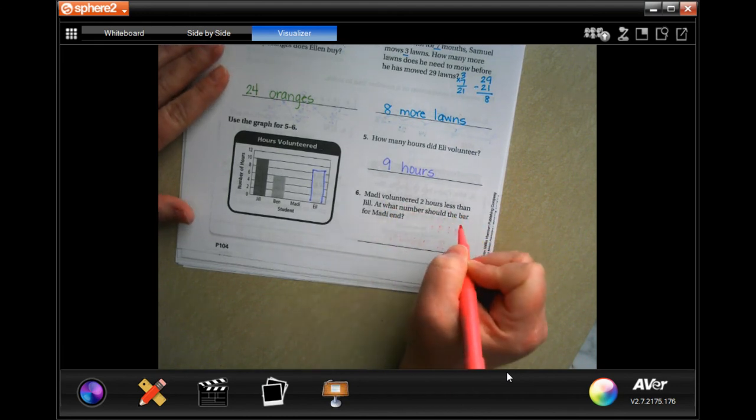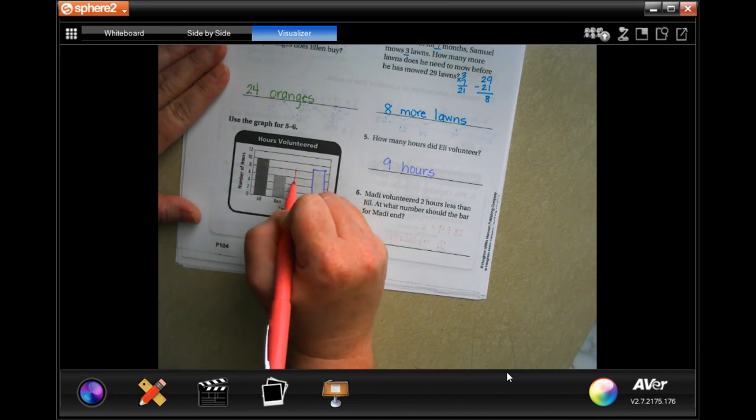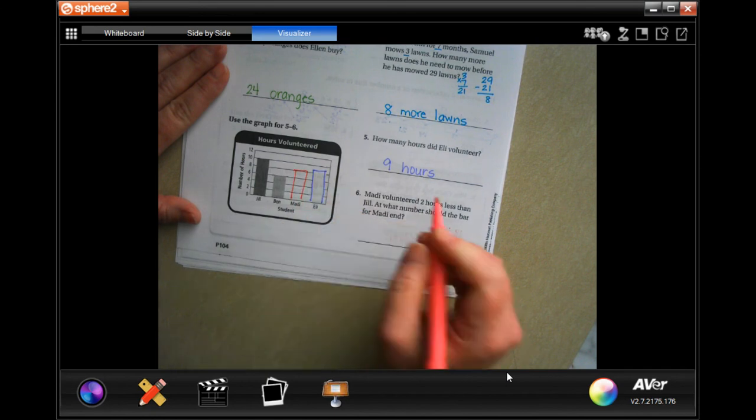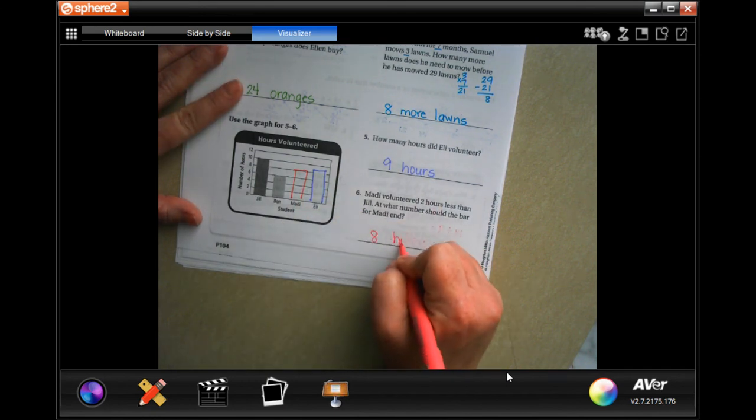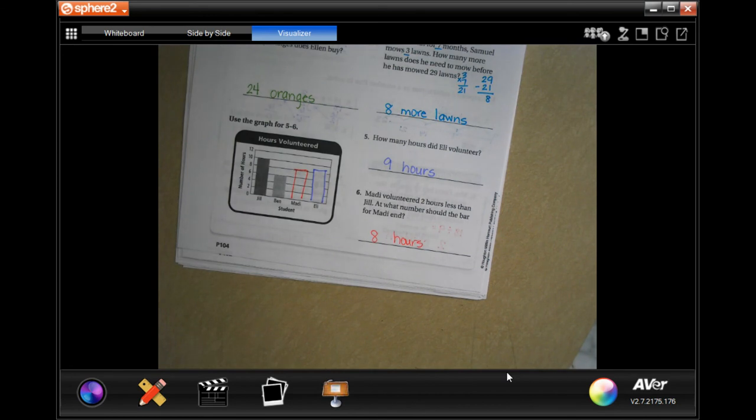What number should the bar be at for Maddie? Well, Jill is at 10, so two hours less would be at eight. Eight hours. All right guys, thanks for hanging out for 6.5. Come on back to 6.6, see you again.